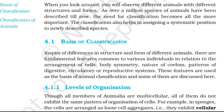Topic 4.1: Basis of Classification. In spite of differences in structure and form of different animals, there are fundamental features common to various individuals in relation to the arrangement of cells, body symmetry, nature of coelom, and pattern of digestive, circulatory or reproductive systems. These features are used as the basis of animal classification.